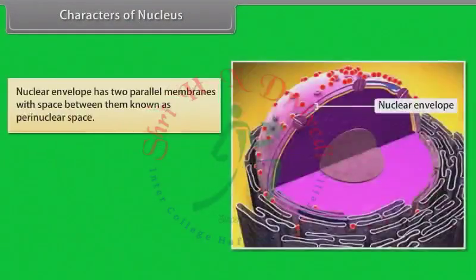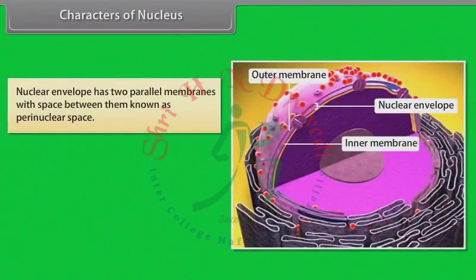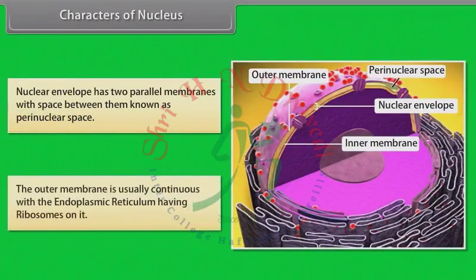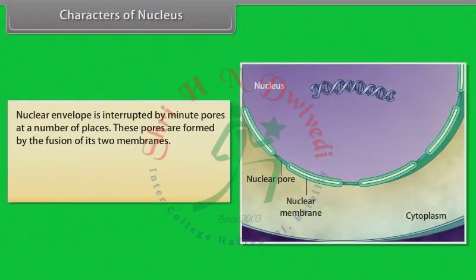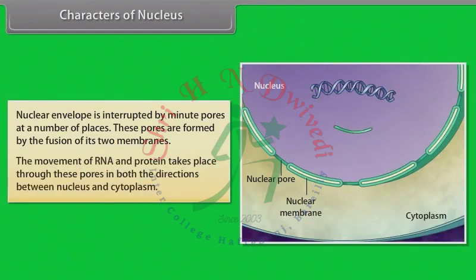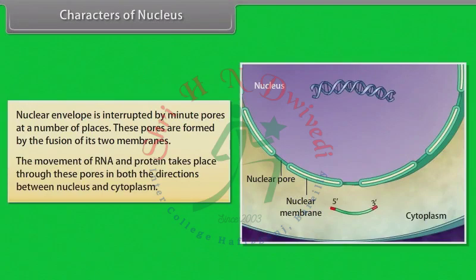The nuclear envelope has two parallel membranes with space between them known as the perinuclear space. The outer membrane is usually continuous with the endoplasmic reticulum, having ribosomes on it. The nuclear envelope is interrupted by minute pores at a number of places, formed by the fusion of its two membranes. The movement of RNA and protein takes place through these pores in both directions between the nucleus and the cytoplasm.